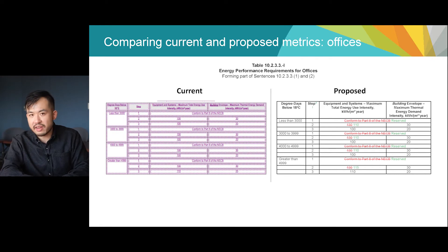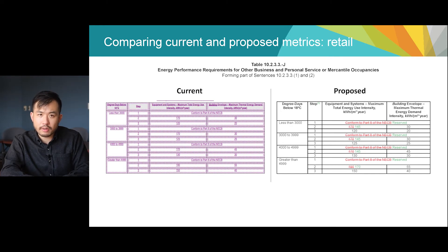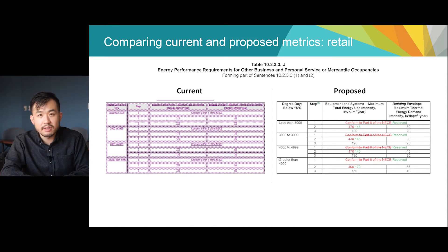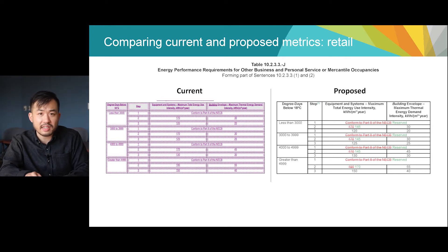These new step two targets present a range of energy savings compared to NECB depending on the size and shape of the building. For a more detailed analysis on how the new targets compare to the old ones, read the update to the metrics research report, available alongside other supplementary materials on gov.bc.ca/buildingcodes. On the left in purple are the current step code metrics for retail occupancies, and on the right are the proposed changes. In climate zones 4 through 6, the TEUI targets are set to 145 instead of 170. In colder climates, the TEUI targets are set to 170 instead of 190. TEDI targets again remain the same. For more information, review the update to the metrics research report on gov.bc.ca/buildingcodes.